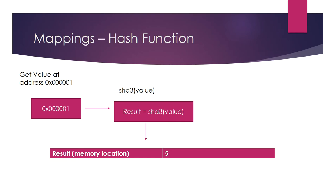For example, address 0x000001 gets fed into SHA3 and the result is a memory location — let's say location 5. So 0x000001 will always hash to that result. But if I take 0x000002 and hash it through SHA3, I'm not going to get result plus one — I might get result plus a thousand. They're not adjacent to each other. That's why it's impossible to loop through a mapping: you're feeding your key into a one-way hash function and the output locations are essentially random.